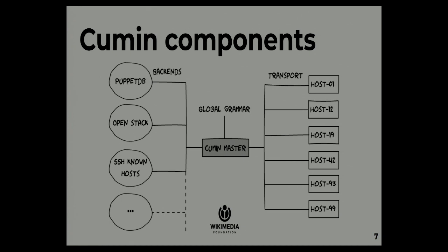The transport is what allows you to execute things over the hosts. Right now we have implemented SSH, chosen for two main reasons: implied security, and simplicity — it doesn't require any dependency on the target host. You only need a Cumin master and an SSH server on the target. We are thinking of adding additional transport layers, in particular HTTP/HTTPS for RESTful APIs — for example, connecting to an Elasticsearch cluster or doing MySQL transport to connect to clusters of MySQL servers.